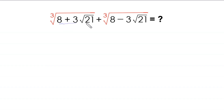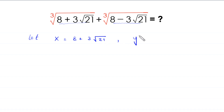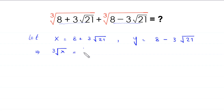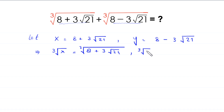We suppose that the expression under the first radical sign is equal to x and the second is equal to y. So let x equal 8 plus 3 times root 21, and y equal 8 minus 3 times root 21. Taking cube roots of both sides, cube root of x equals cube root of (8 plus 3 times root 21).